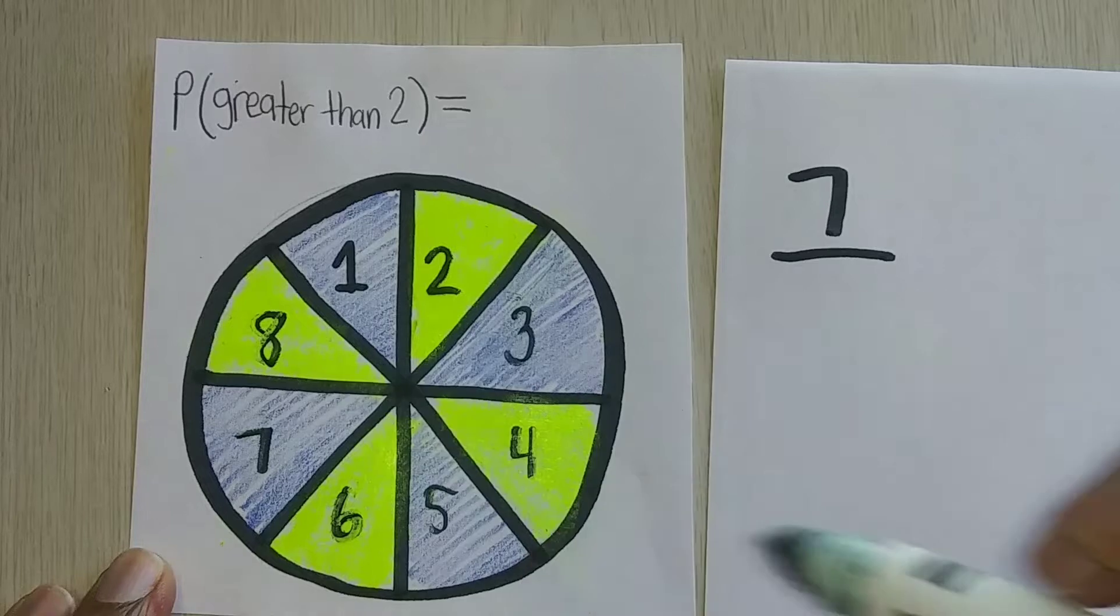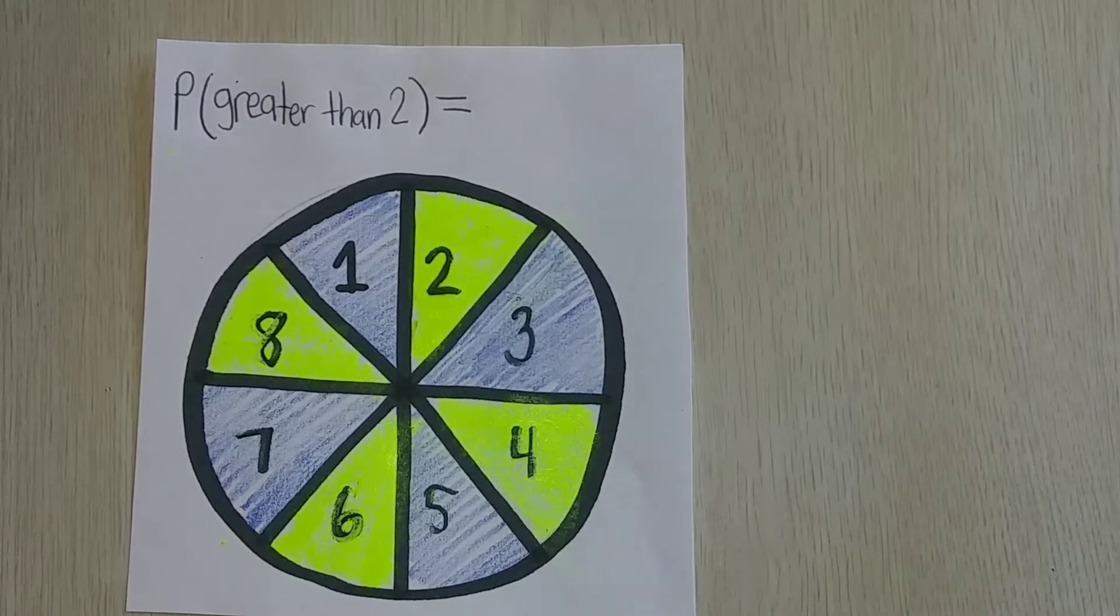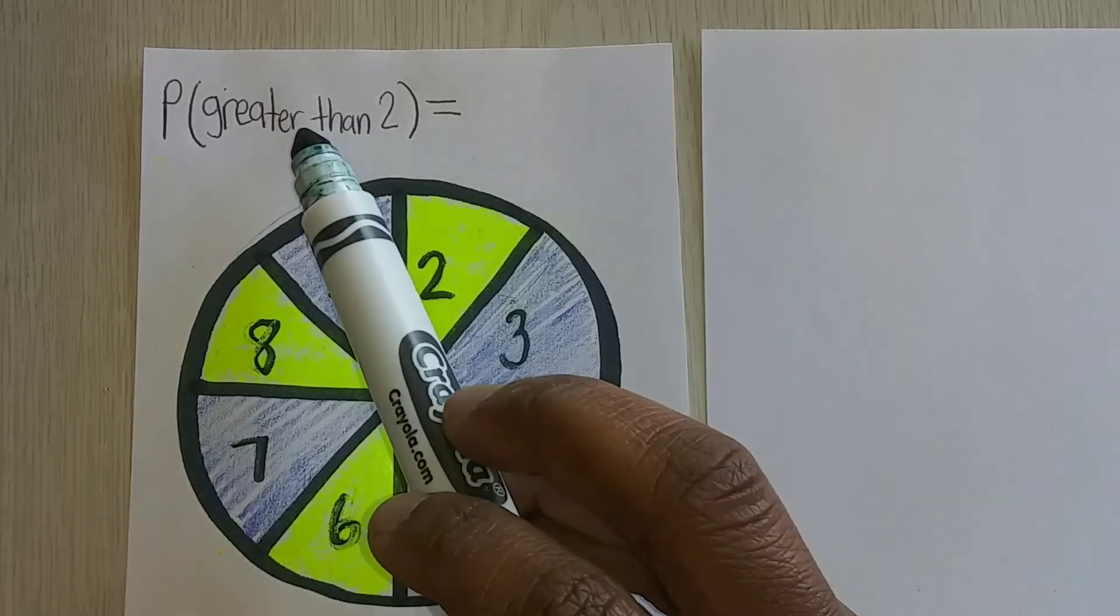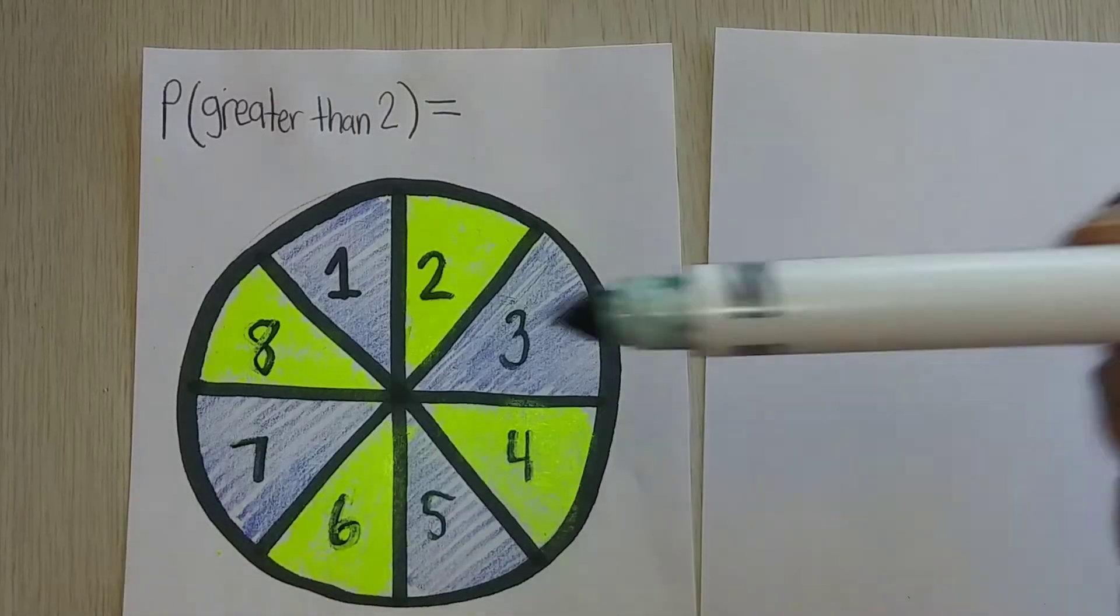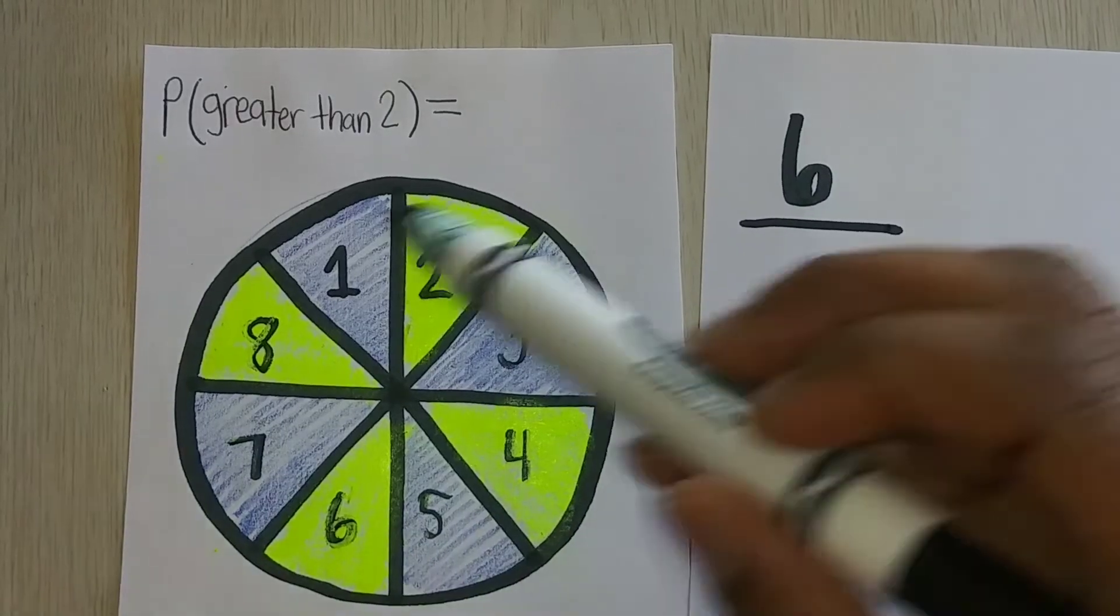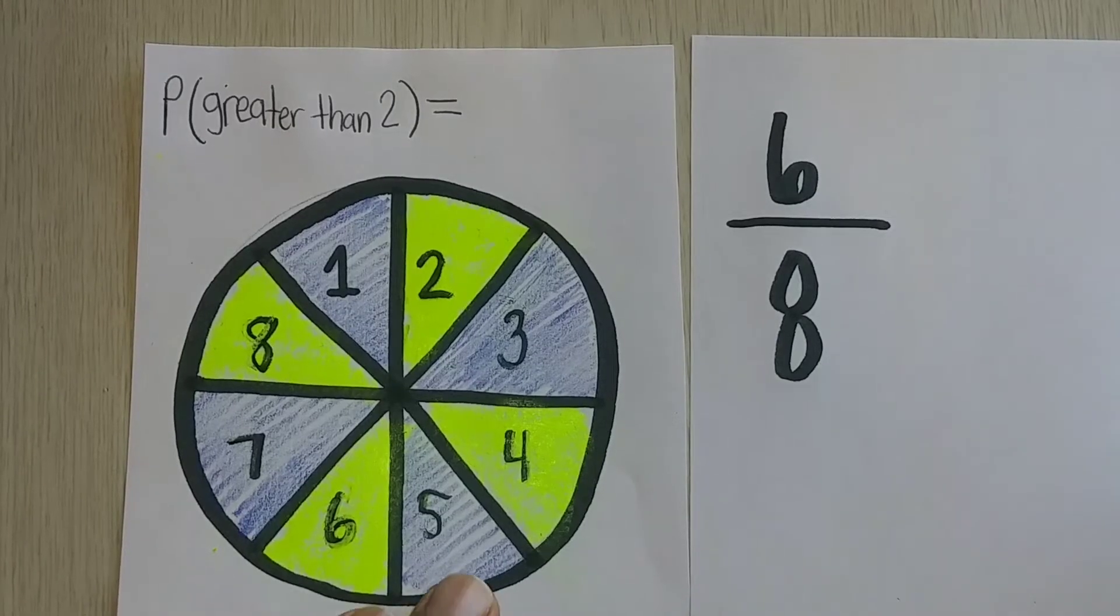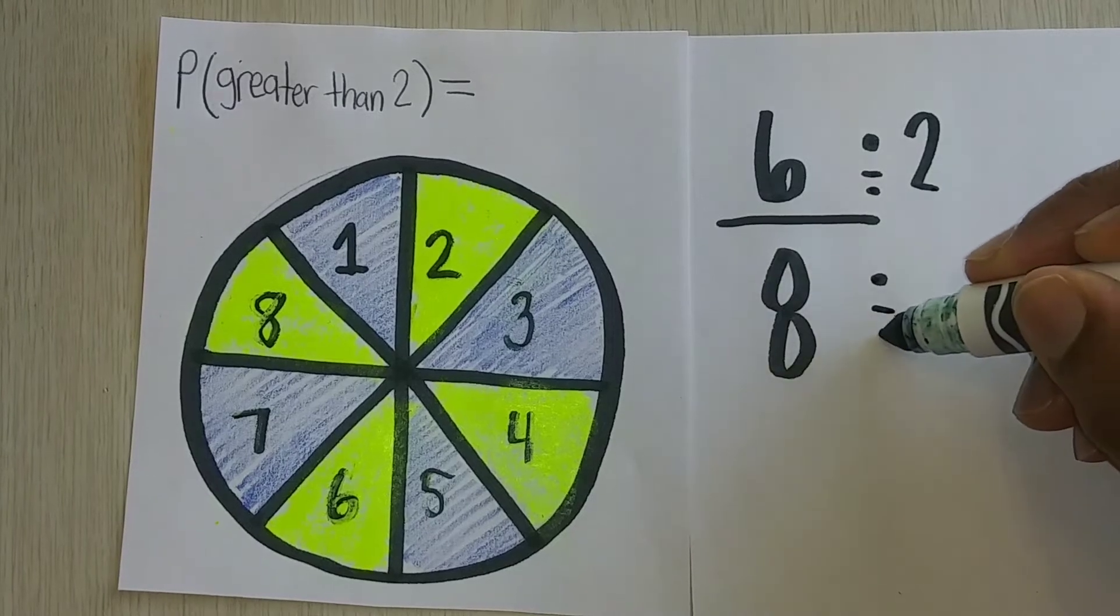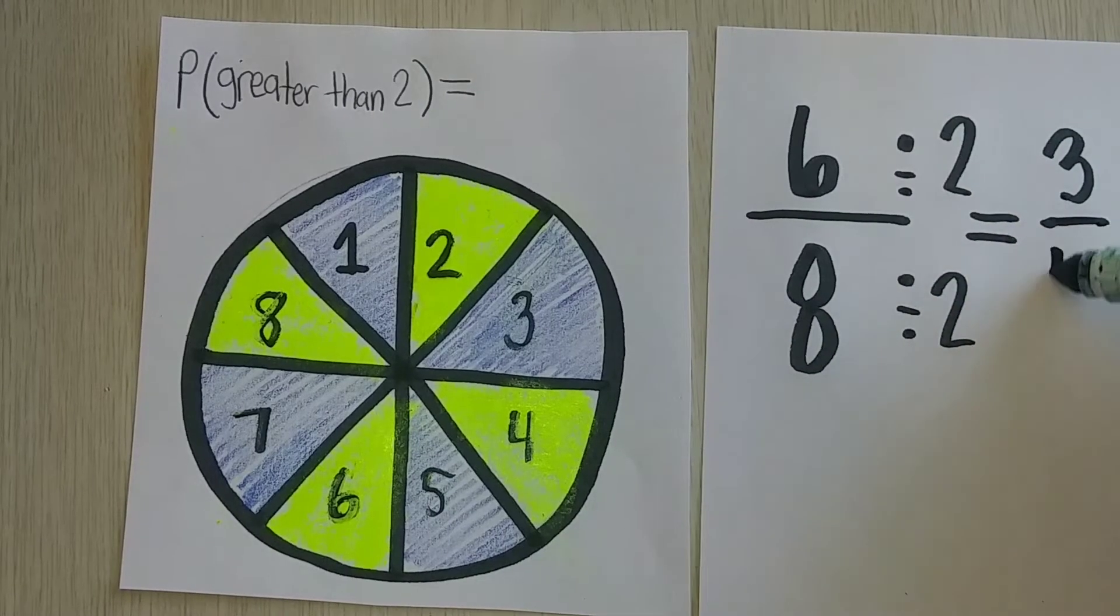Actually, there's one, two, three, four, five, six. If we want to find out what the probability is of this spinner landing on an outcome that's greater than two, let's count. We have one, two, three, four, five, six. There are six possible outcomes that's greater than two. And you always want to put your total as your denominator. So greater than two is six out of the eight different outcomes. I can also simplify this by dividing by the greatest common factor of two and get three-fourths.